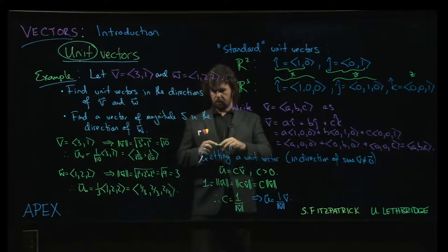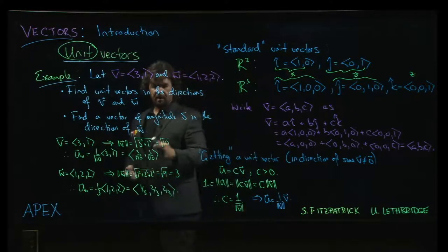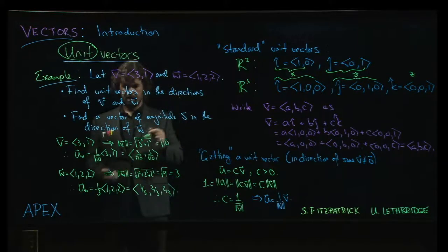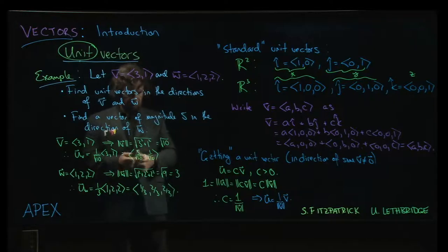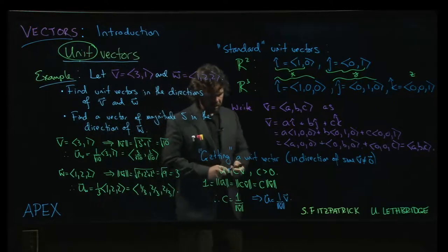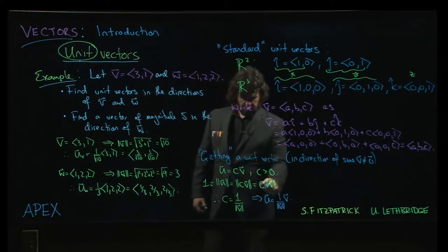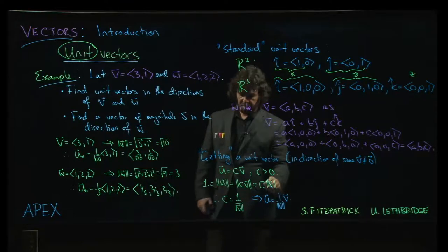Now, what about this last part? A vector of magnitude 5 in the direction of w, right? Well, remember we sort of have the property sitting down here, right? The magnitude of a scalar multiple of a vector is that scalar times the magnitude of the vector.